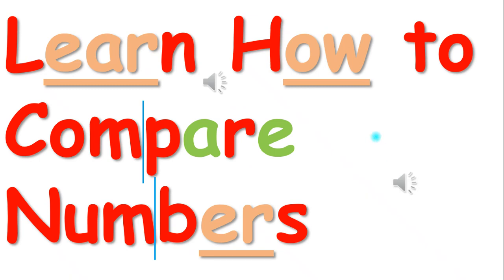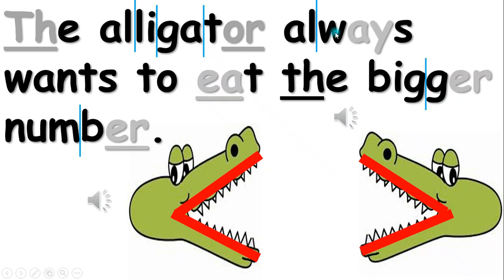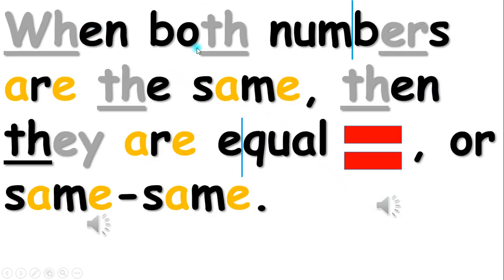Hello boys and girls. In this video, you will learn how to compare numbers. The alligator opens his mouth to the bigger number. The alligator always wants to eat the bigger number. When both numbers are the same, then they are equal or same-same.